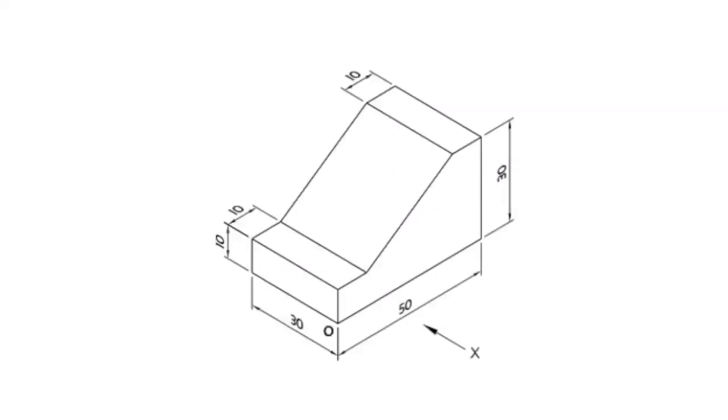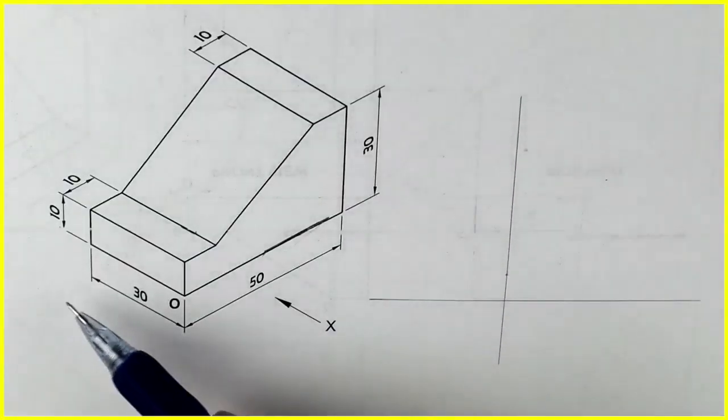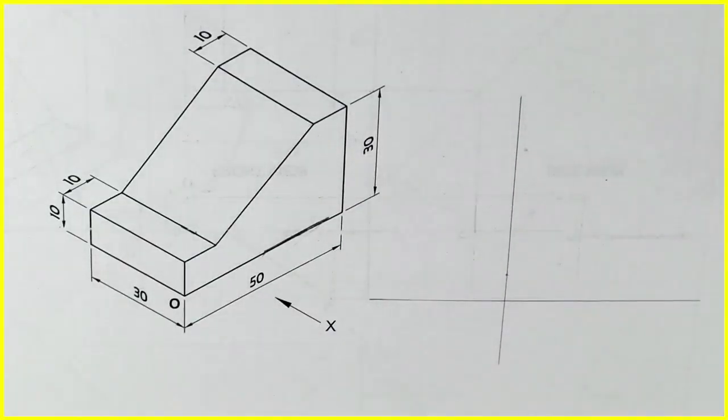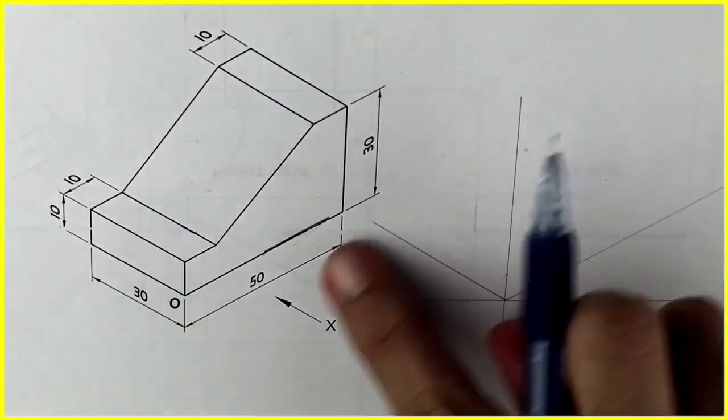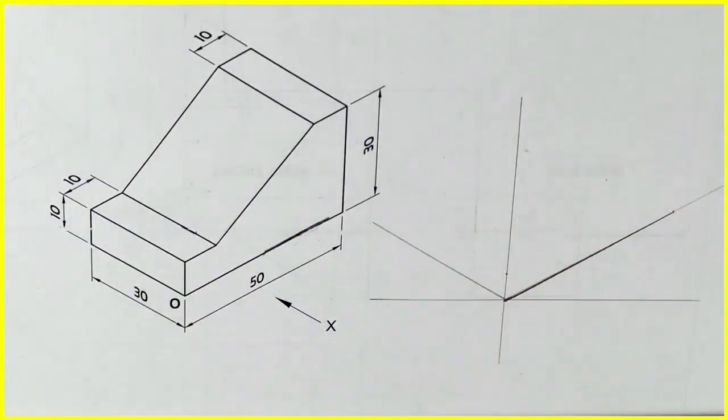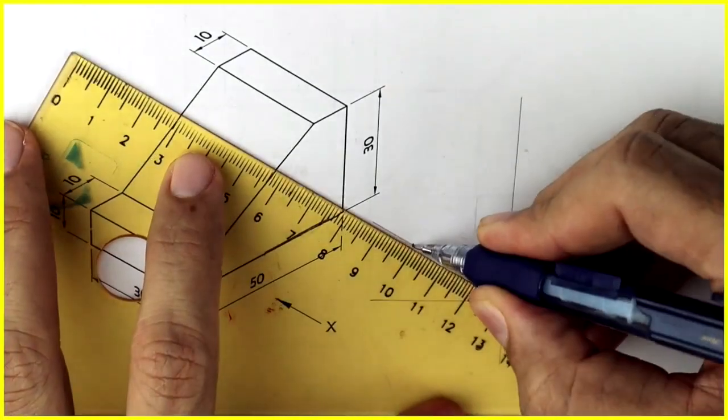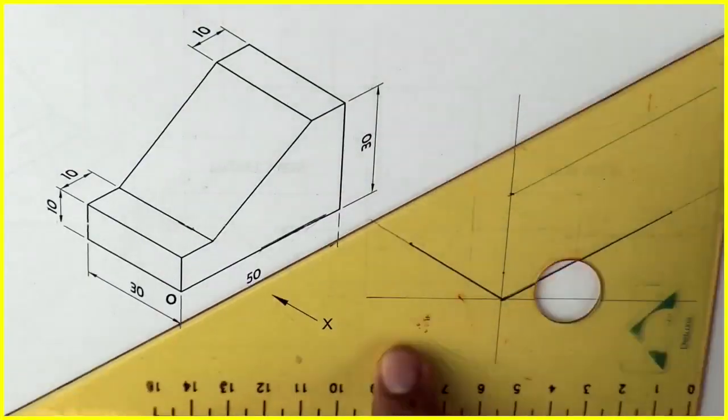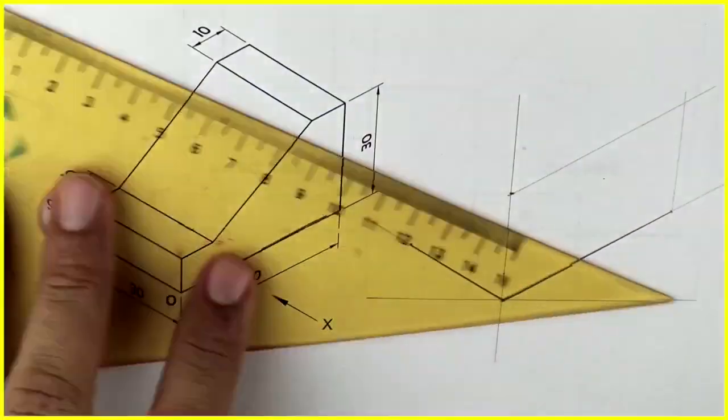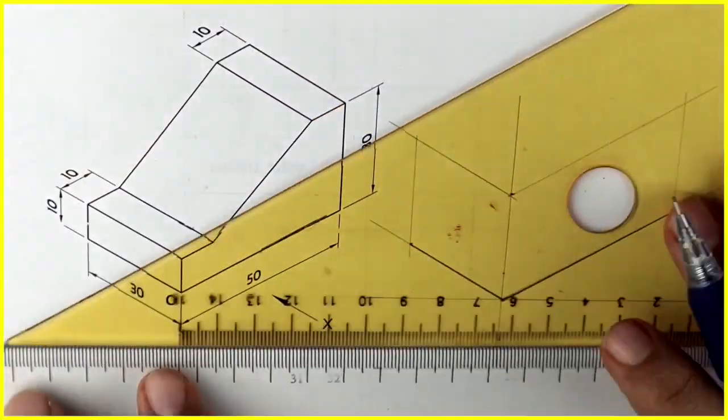Welcome to technical drawing. Today we will draw this shape. Length is 50, height is 30, width is 30. First we will draw a layout. Draw plus and we'll draw 30-30 degree. We'll mark 50, then 30. Height is 30, so first we will draw a box, always complete box.